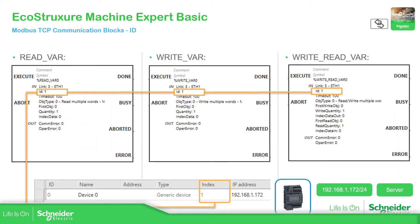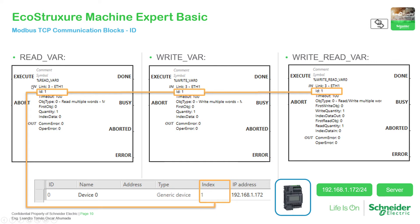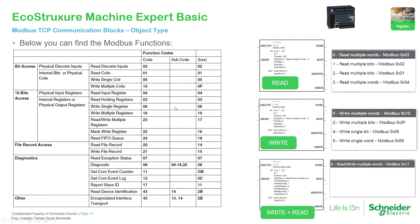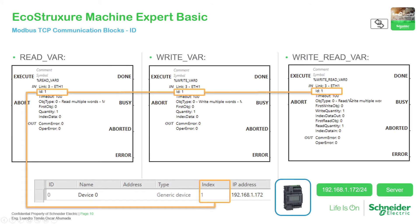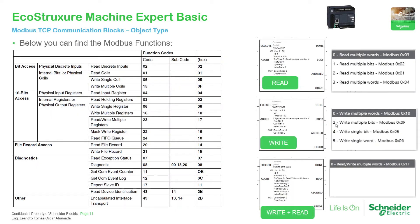Once you have configured that, you can see all the parameters available to configure. This is important data so the PLC knows which device it needs to communicate with. The other thing to define is how we're going to read — the type of options we want to read and write. We have a table of Modbus functions depending on which function block we're using: read, write, or read-and-write.